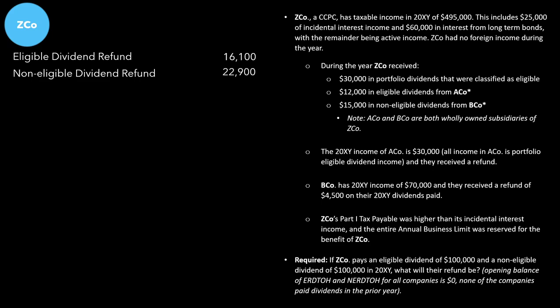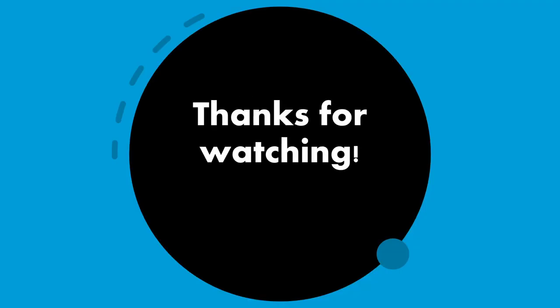Adding the eligible and non-eligible dividend refunds together, the total refund is $39,000. There was a lot to this question, so I hope the visualizations helped. Until next time, thank you so much for watching, and happy studying.